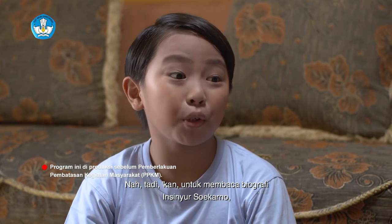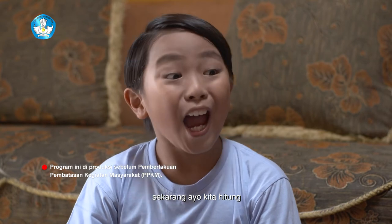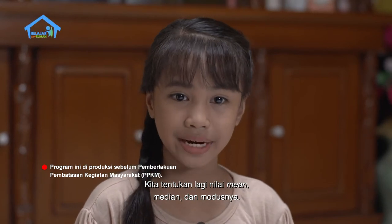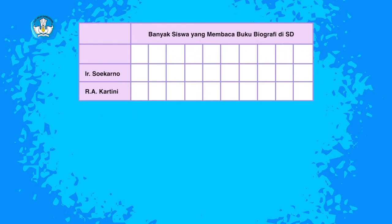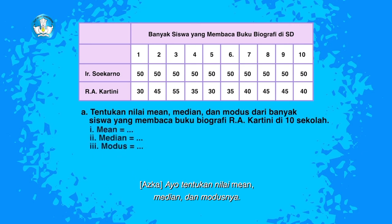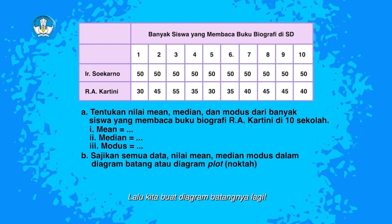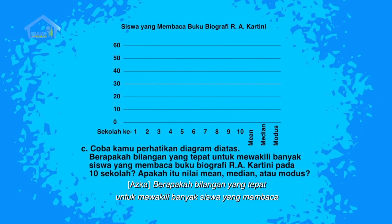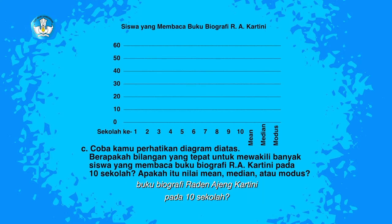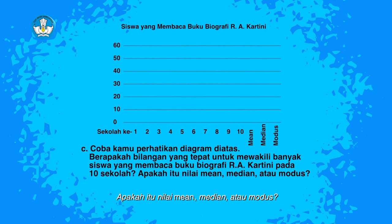Tadi kan untuk biografi Insinyur Soekarno. Sekarang, ayo kita hitung untuk biografi Raden Ajeng Kartini. Kita tentukan lagi nilai min, median, dan modusnya. Aku tampilkan lagi datanya supaya kamu tidak lupa. Ayo tentukan nilai min, median, dan modusnya, lalu kita buat diagram batangnya lagi. Setelah itu, perhatikan diagramnya. Berapakah bilangan yang tepat untuk mewakili banyak siswa yang membaca buku biografi Raden Ajeng Kartini pada 10 sekolah? Apakah itu nilai min, median, atau modus?